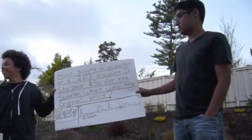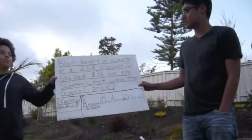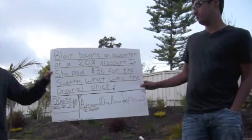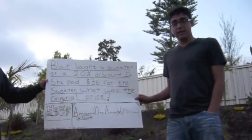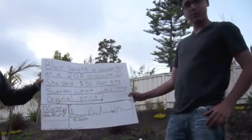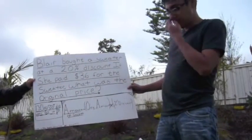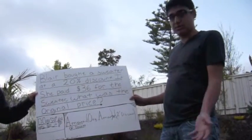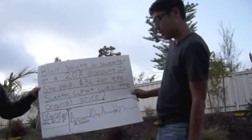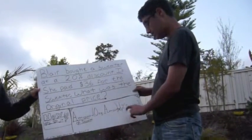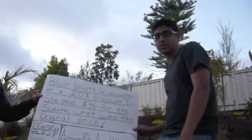Blair bought a sweater at a 20% discount. If she paid $36 for the sweater, what was the original price? So how do you do it? There's an easy formula you should remember. The amount of discount equals the original amount times the discount. Let's flip it over.